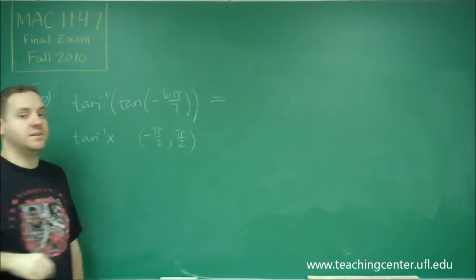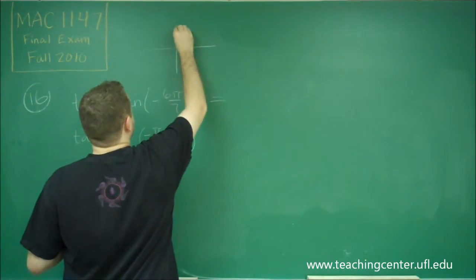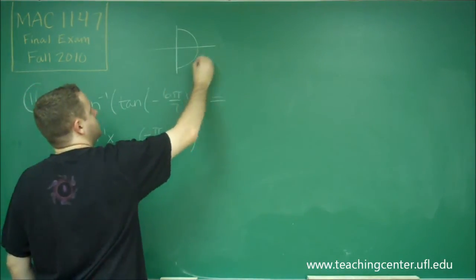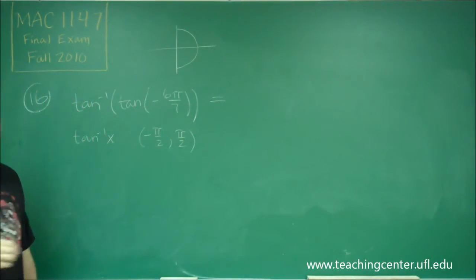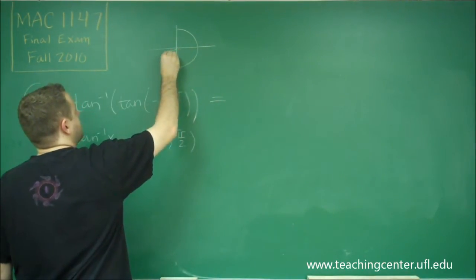Now, negative 6 pi over 7 is not in that range. So keep in mind, we're talking about this half of the unit circle from negative pi over 2 up to pi over 2. Now, negative 6 pi over 7 is going to be a little bit less than negative pi, which means it's going to be somewhere around here.